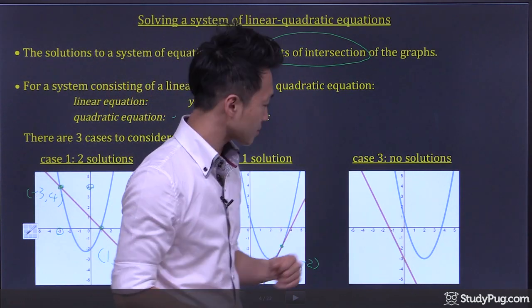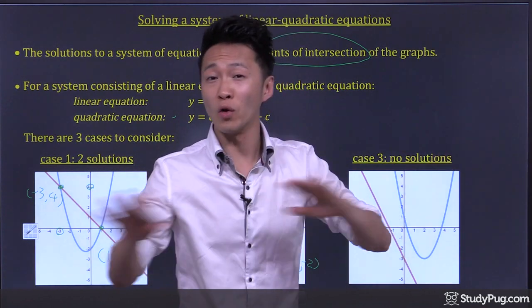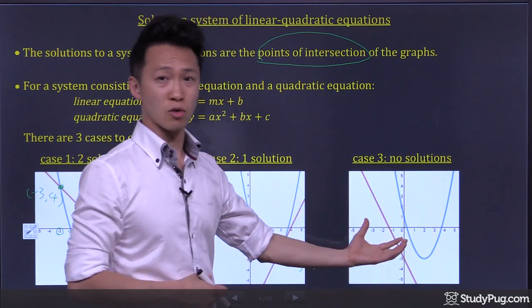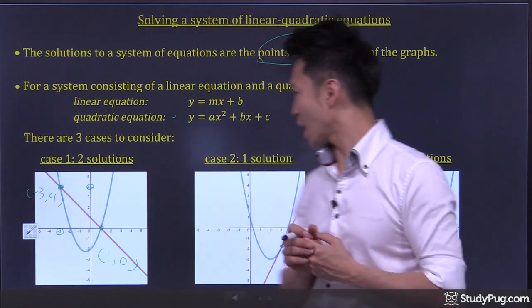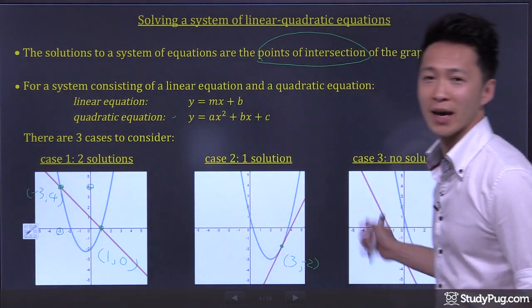Now, case number three. Straight line and parabola can actually have no intersection points at all. In this case, the solution to the system will be no solutions. So in the following examples, I'll be going over to answer questions that represent each case.